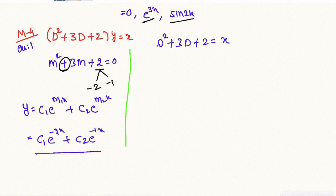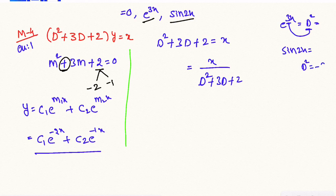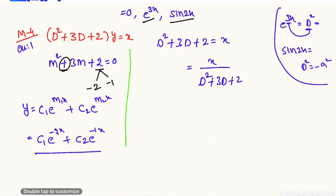For the particular integral, we have PI = x divided by (D² + 3D + 2). For the e^(3x) case, we substitute D with 3. For the sin 2x case, we replace D² with -4. But here for the x term, a different rule applies, so we use a different formula.